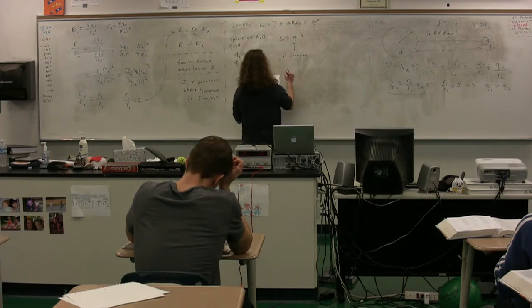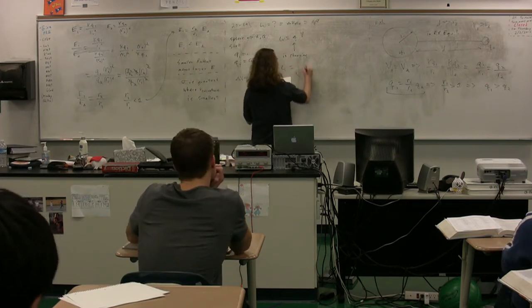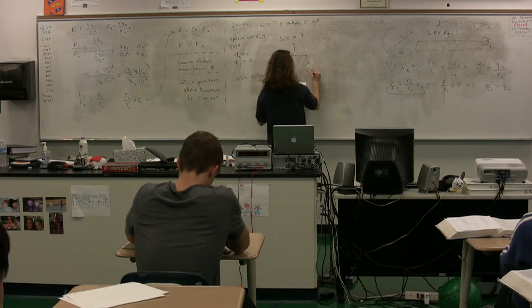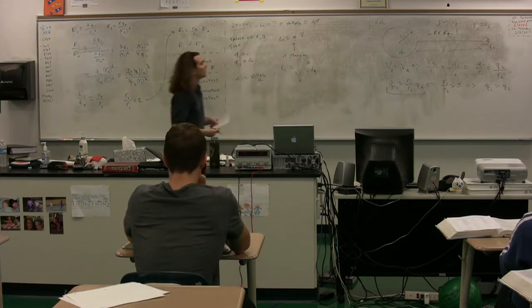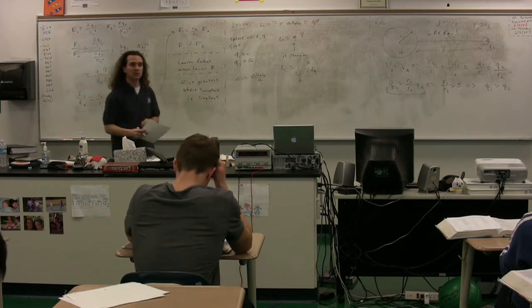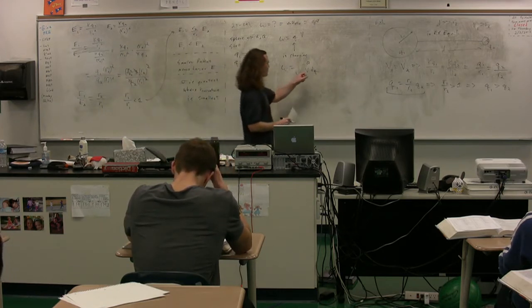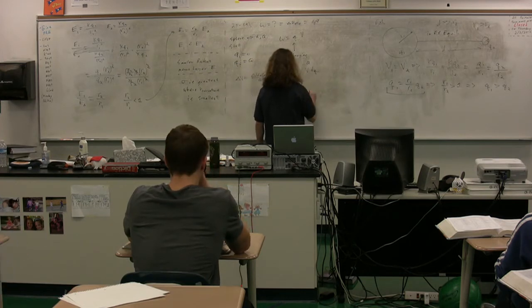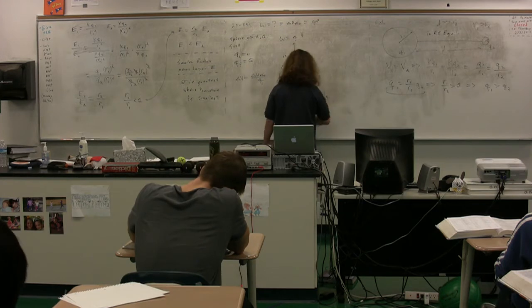In other words, the work is equal to the integral from zero to big Q of V dq. Now, we can substitute in the equation for electric potential of a point charge, which is from zero to Q, we have kq over r with respect to q.